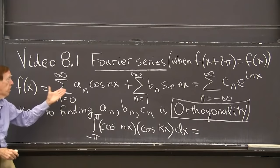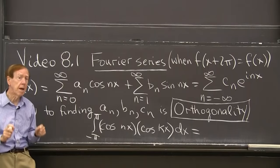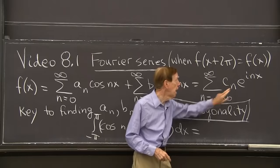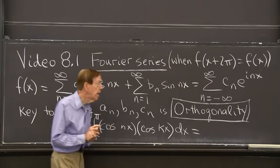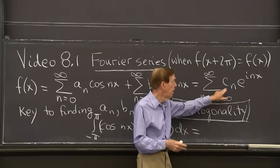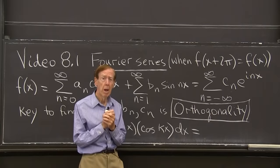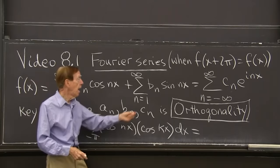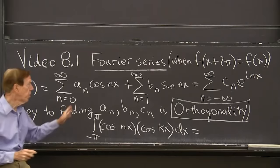So we're looking for the a_n's and b_n's. And really, I want to show you at the same time the complex form with coefficients c_n. And now n goes from minus infinity to infinity. That's really the more beautiful form, because there's a nice formula for c_n that one formula does the job.